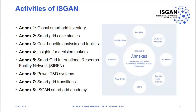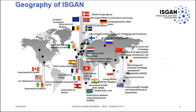ISGAN is divided into eight annexes. We have one about the global smart grid inventory, then smart grid case studies and cost-benefit analysis with toolkits — I am currently the leader of this annex. Annex seven is about transitions, and then we have the ISGAN Smart Grid Academy, which is the organization that promoted this webinar and many other webinars.